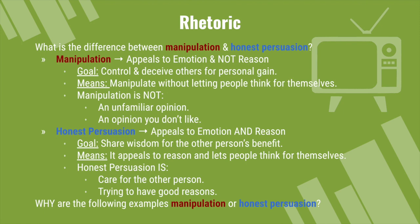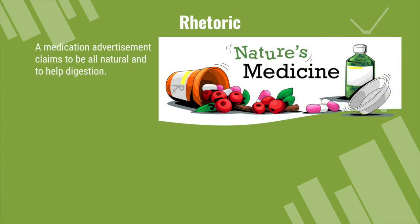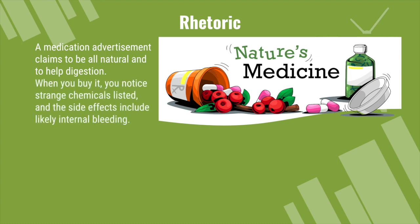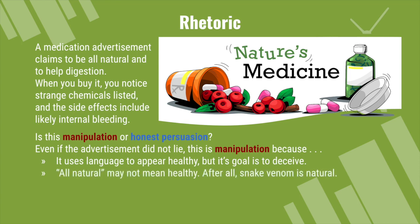We can ask why the following examples are manipulation or honest persuasion. A medication advertisement claims to be all natural and to help digestion. When you buy it, you notice strange chemicals listed, and the side effects include likely internal bleeding. Is this manipulation or honest persuasion? Even if the advertisement did not lie, this is manipulation, because it uses language to appear healthy but its goal is to deceive. It says things like 'all natural' and has pictures of plants and healthy people to make it appear healthy. Also remember that 'all natural' may not mean healthy — after all, snake venom is natural. The lesson to take away here is that you need to think for yourself and look deeper than appearances.